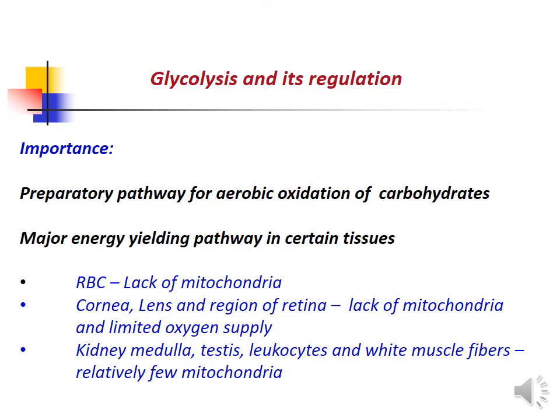Glycolysis is the preparatory pathway for aerobic oxidation of carbohydrates and is the major energy-yielding pathway in certain tissues — for example, red blood cells which lack mitochondria, as well as the cornea, lens, and regions of the retina which also lack mitochondria and have limited oxygen supply. Kidney medulla, testis, leukocytes, and white muscle fibers have relatively few mitochondria. In all these tissues, glycolysis is the major energy-yielding pathway.